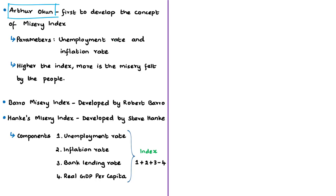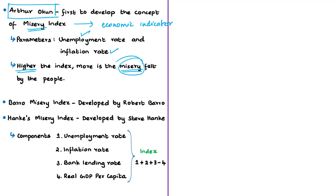The literal meaning of misery is a state of suffering or unhappiness. Arthur Okun developed the misery index as an economic indicator to show how an average citizen is performing economically. In Okun's index there were two parameters: unemployment rate and inflation rate. This indicator was initially applied to measure the health of the American economy under each president of America. When the misery index is higher, it means there is more unemployment and more inflation — more misery felt by the average citizen.